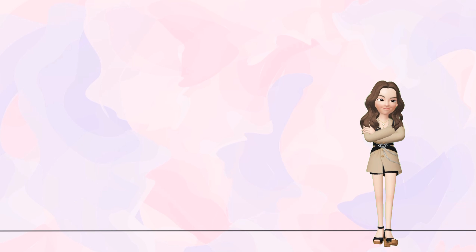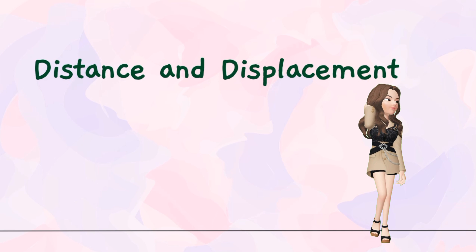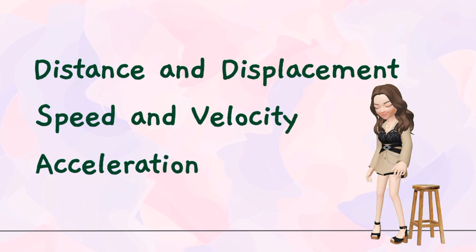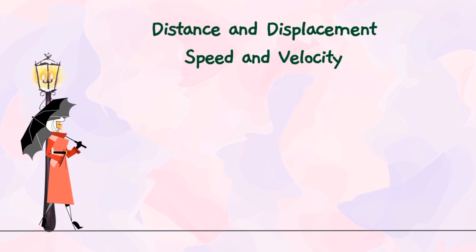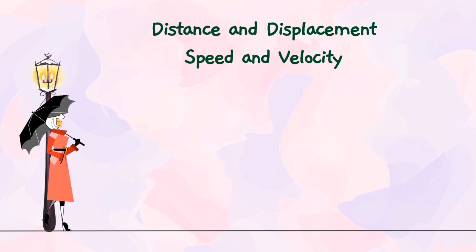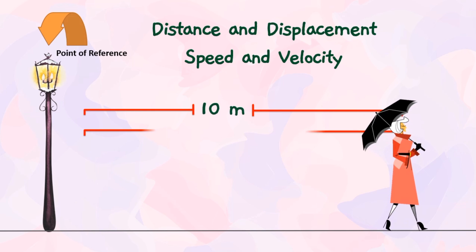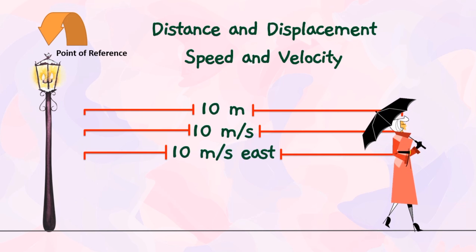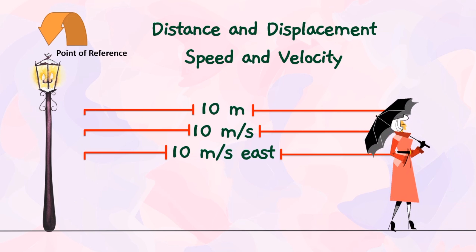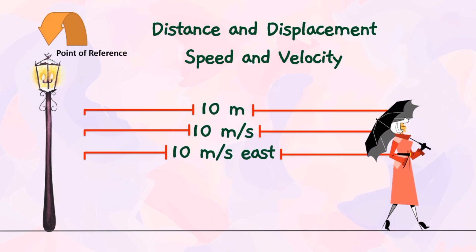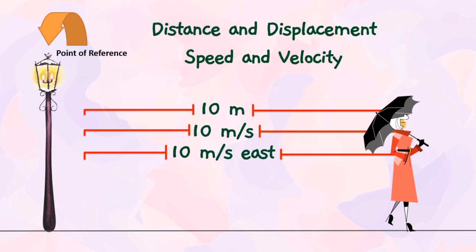Hello everyone, welcome to our new video. In our previous lesson we described motion in terms of distance, displacement, speed, velocity, and acceleration. In order to describe the motion of a given object you need to know its position. When you know the point of reference you will be able to determine how far the object has traveled, how fast it is moving, and the direction. With the help of visual representations like diagrams, you can easily describe the position of an object, and another way is through the use of motion graphs.